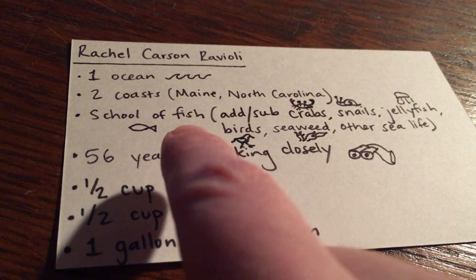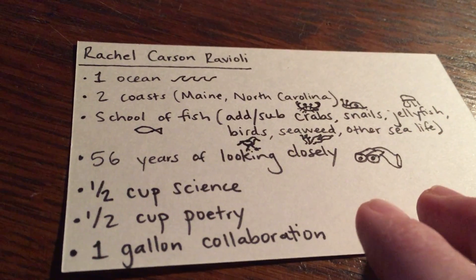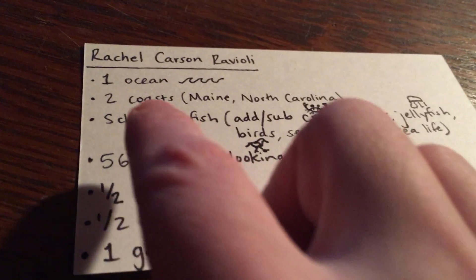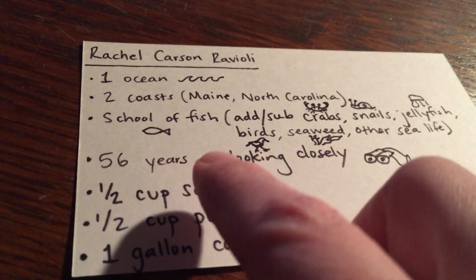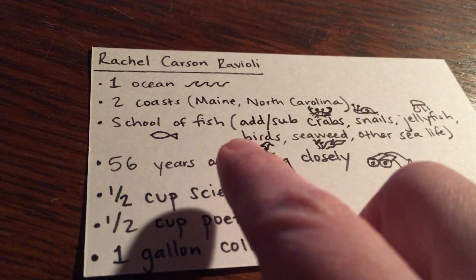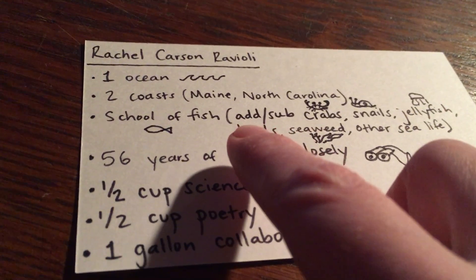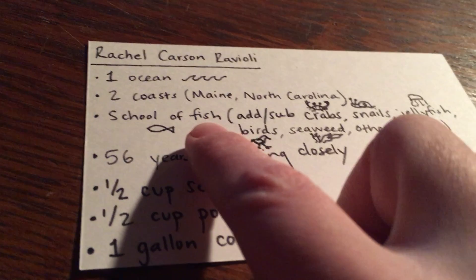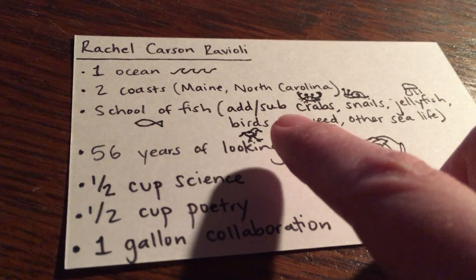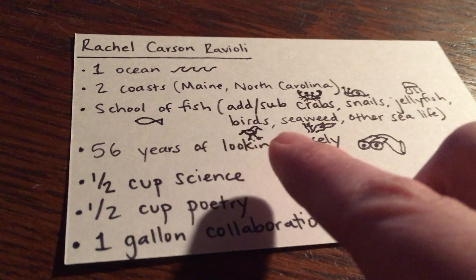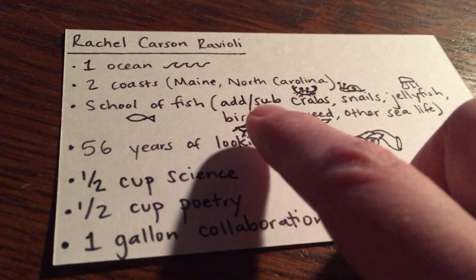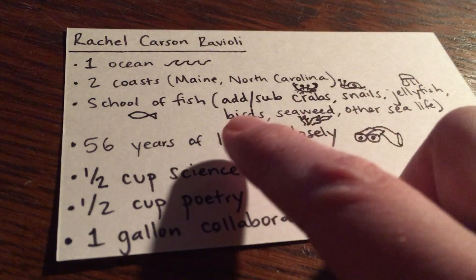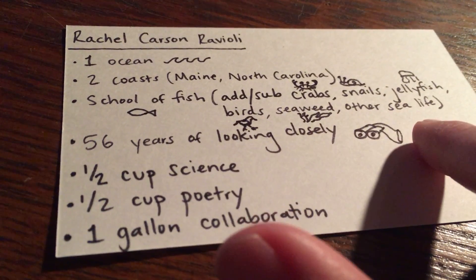A school of fish, because she studied all the life in the sea. It doesn't just say fish, but it has the units — a school of fish. And this is something you find in some recipes: it gives you an option for things you could use in addition to or instead of something. So because she studied everything in the ocean, I have here you could add or substitute crabs, snails, jellyfish, birds, seaweed, and other sea life.